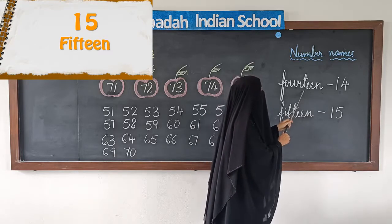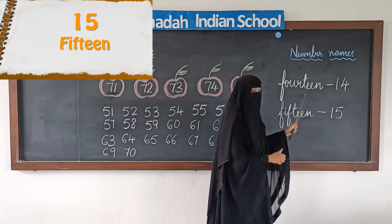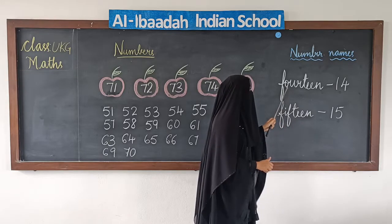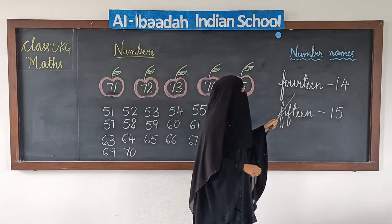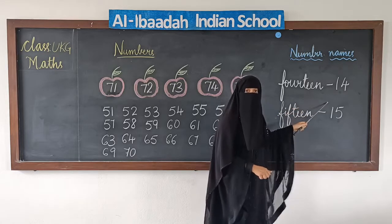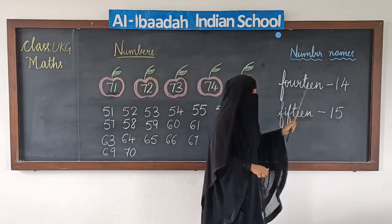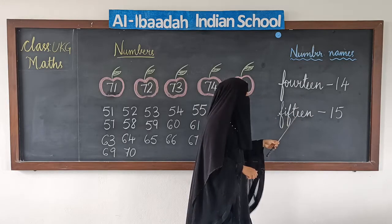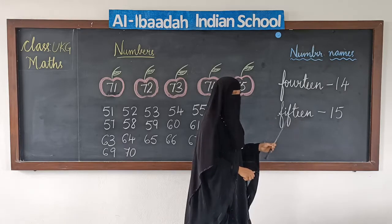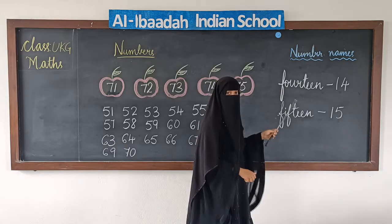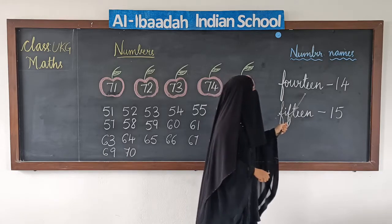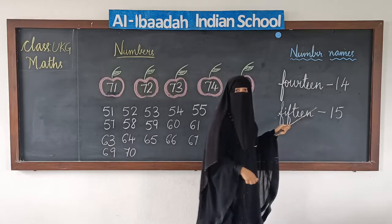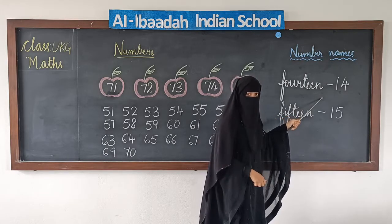See here — same T-E-E-N ending here and here too. You just have to remember the first part: F-O-U-R for fourteen, F-I-F for fifteen, then T-E-E-N. Again: F-O-U-R-T-E-E-N — 14. F-O-U-R-T-E-E-N — 14.